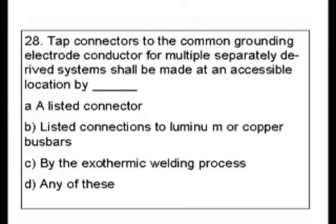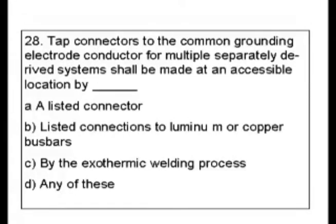If I had a question like this, my experience would have me mark D — any of these — and I would move on, and here's why. Because I have done this with B, aluminum and copper bus bars, and by C, exothermic welding process. And so I figure a listed connector would also be acceptable somehow, so I would mark D, any of these, and go on and come back to it later.